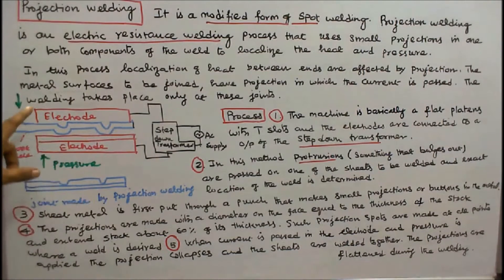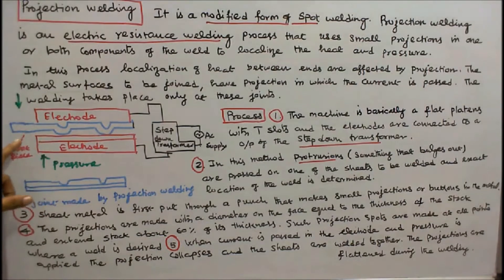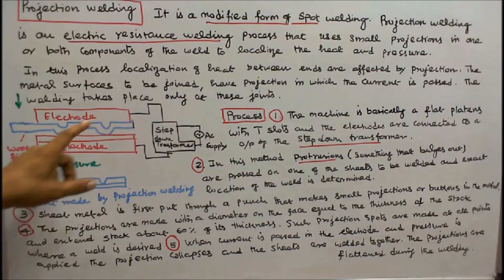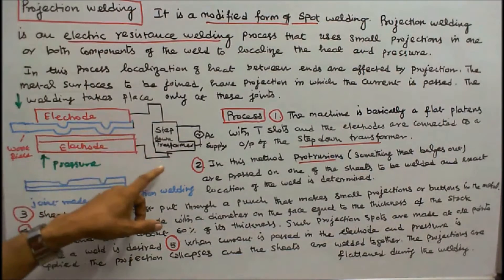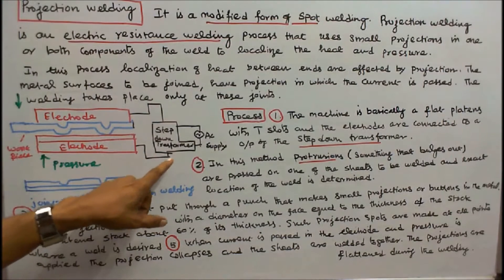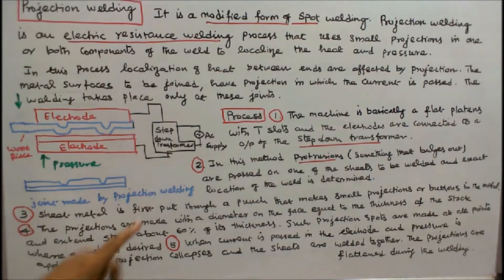This is the arrangement of projection welding. It consists of two electrodes, a workpiece, and small projections. The electrodes are connected to a step-down transformer to get a high current and low voltage, and the step-down transformer is energized by AC supply.